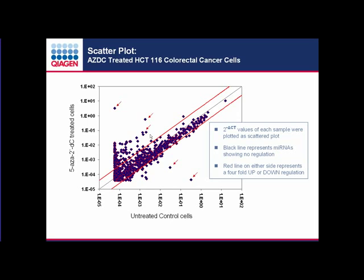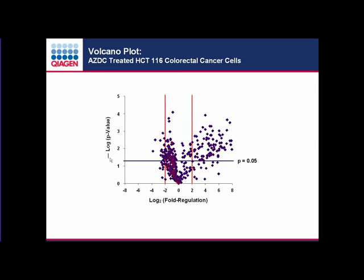The volcano plot visualizes data by plotting the negative log of the p-value on the y-axis against the log2 of fold regulation. This is most meaningful when there are many biological replicates, to identify microRNAs consistently showing similar regulation across replicates. The black line represents a p-value of 0.05; anything above that line — with a p-value lower than 0.05 — is considered most significant, consistently showing similar regulation across multiple biological replicates.